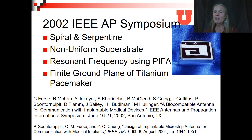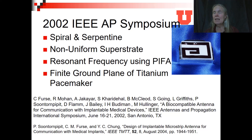In 2002, at the IEEE AP Symposium, we presented work on spiral and serpentine antennas. We used a non-uniform superstrate material, the resonant frequency of the PIFA, and the finite ground plane of the titanium pacemaker. We basically took a dipole antenna, split it in half by putting a ground pin on the left — making it into a PIFA — then rolled and coiled it up, either in an S or a serpentine shape, in order to make the antenna smaller. This produced a coiled or serpentine PIFA shape.